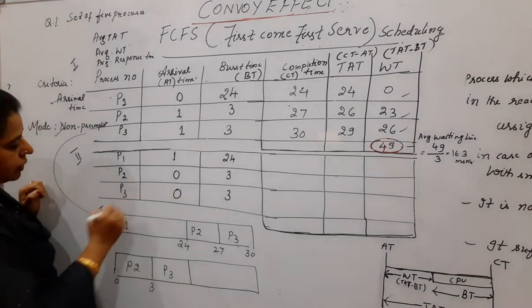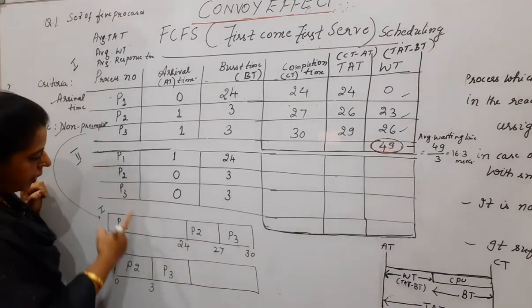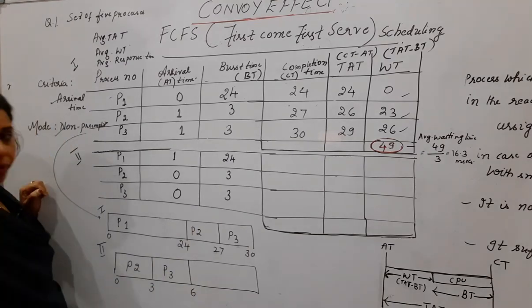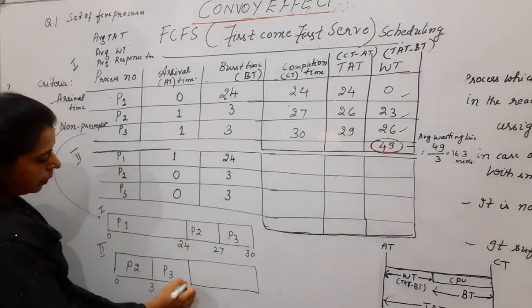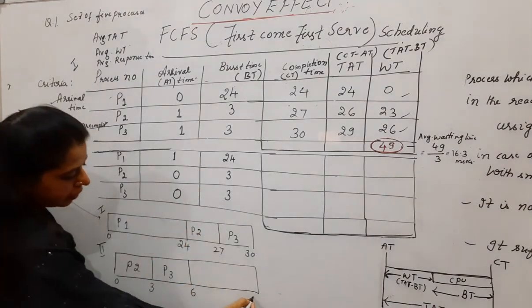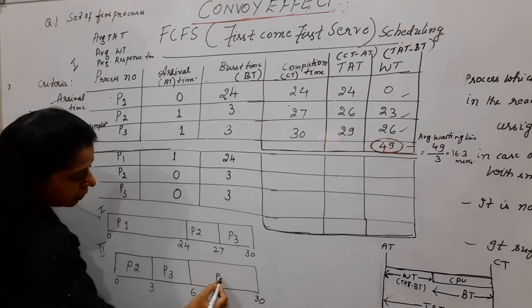It will take 3 plus 3 is 6. Next P1. P1 will get its chance at 6th millisecond and P1 requires 24. So it will complete its job at 30. So this is the Gantt chart for the second situation.